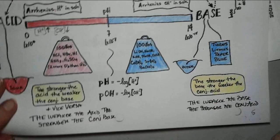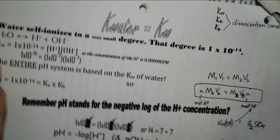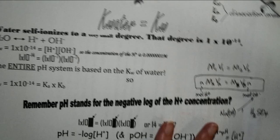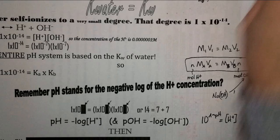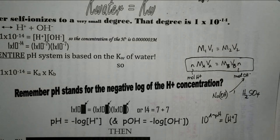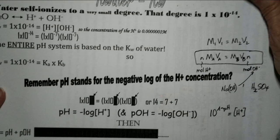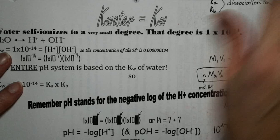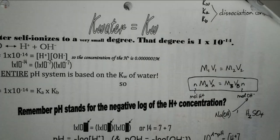Flip to the next page in your packet. This one is a little bit beyond what we did. We did this in pre-AP, only you didn't have all the K's all over the place. So we have a water constant. We talked about KSP and KEQ — here is another one. This is still KEQ, still talking about equilibrium.